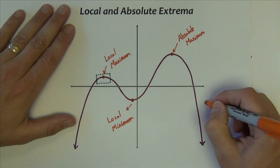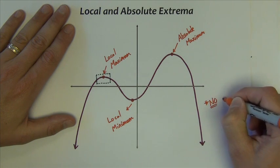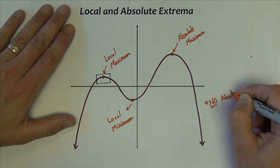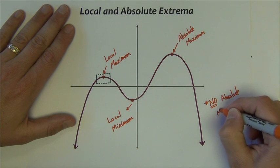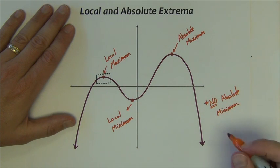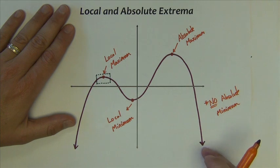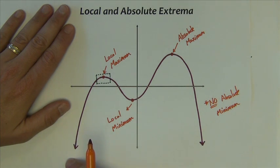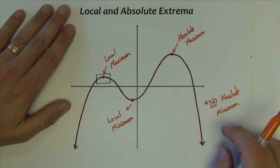Now this graph has no absolute minimum. At least the way that I drew it, because the graph continues to go down forever, it never stops going down, therefore it doesn't have a bottom point, it doesn't have an absolute minimum.